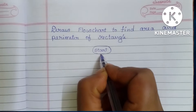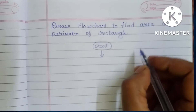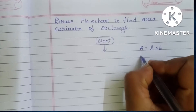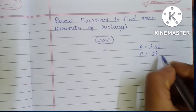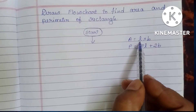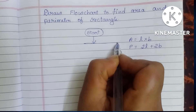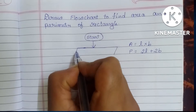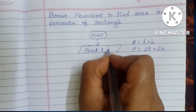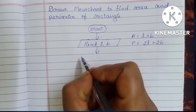Next we have to read the input. The formula for area of a rectangle is: Area = Length × Breadth. The formula for perimeter of a rectangle is: Perimeter = 2 × Length + 2 × Breadth. So the inputs are Length (L) and Breadth (B). Input and output are written within a parallelogram — so draw a parallelogram and write: Read Length L, Breadth B.